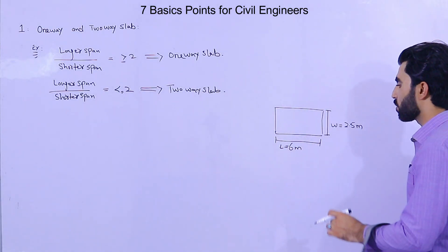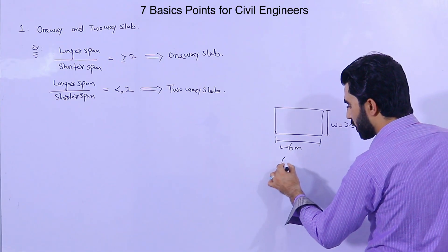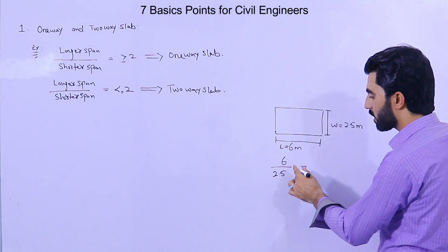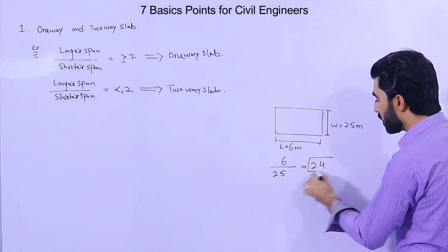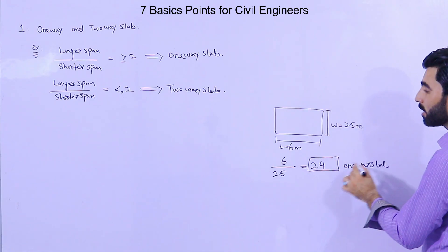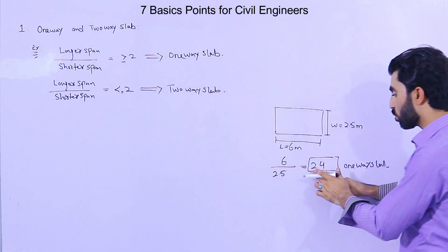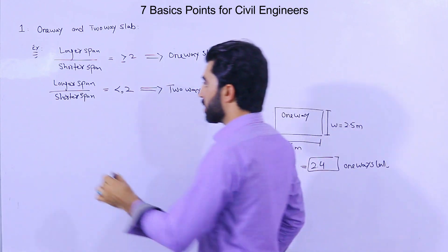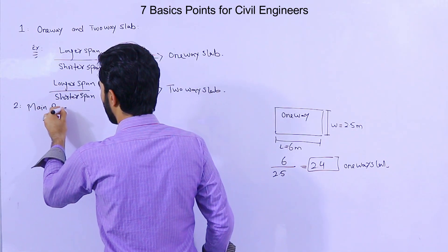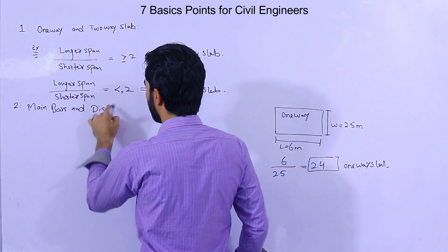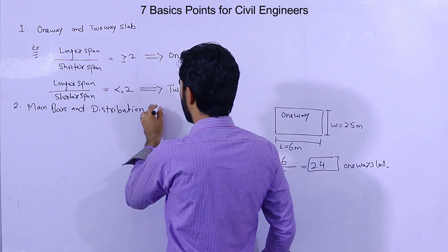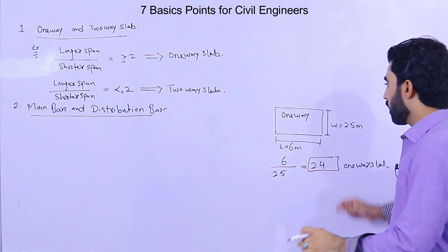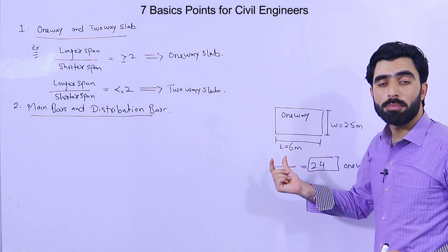The second point is main bars and distribution bars. This concept applies especially in one-way and two-way slabs. In a one-way slab we have both main bars and distribution bars. When we place steel rods on the shorter direction, those are called distribution bars. When we place steel rods on the longer span, those are called main bars.